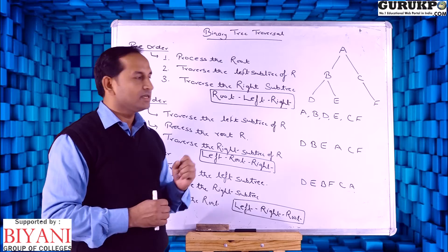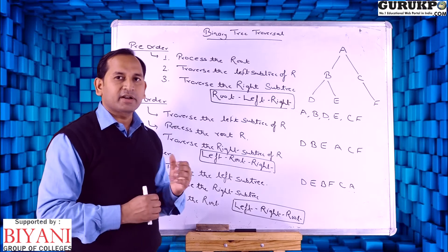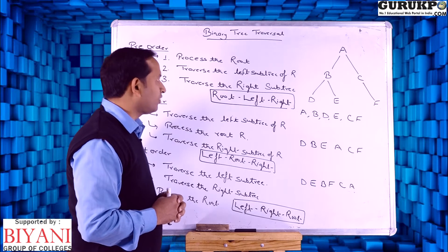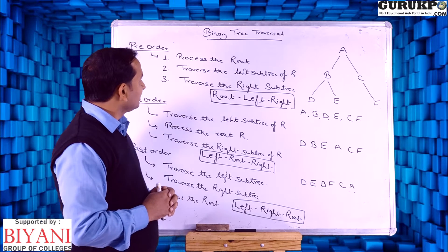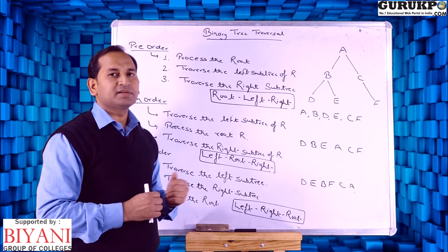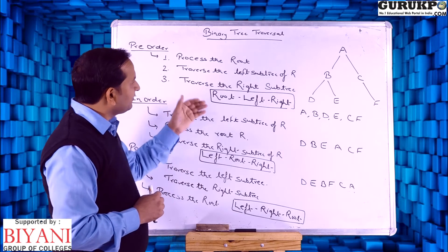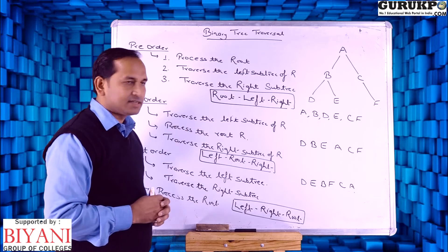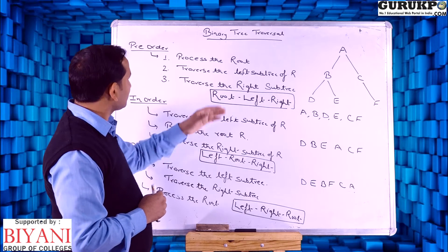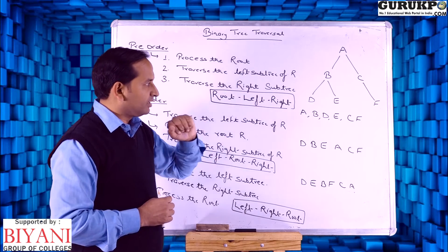First we discuss pre-order traversal. In case of pre-order traversal, first we process the root node of the tree, then in the next step we traverse the left subtree of root, and in the third step we traverse the right subtree. In other words, we can say first we process root, then left subtree, then right subtree.